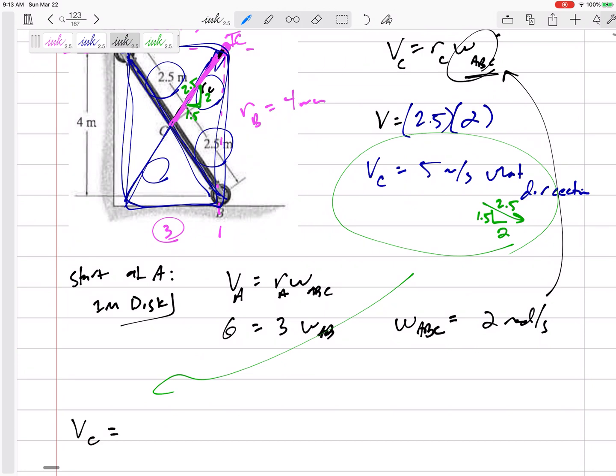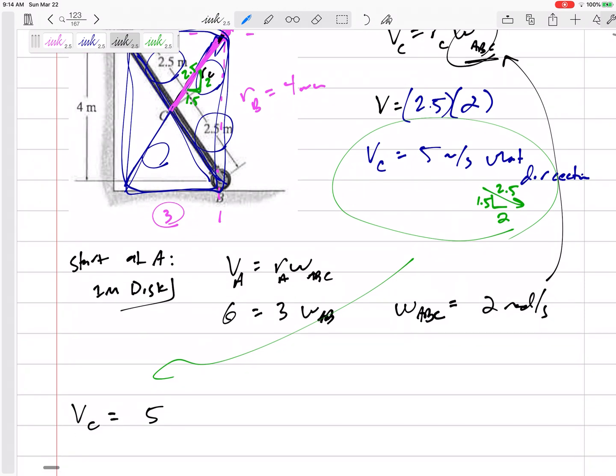The velocity would be, let's see, the x component, 2 over 2.5 and 1.5 over 2.5 down into the negative j.